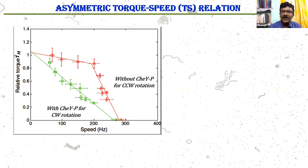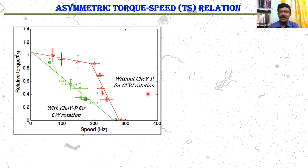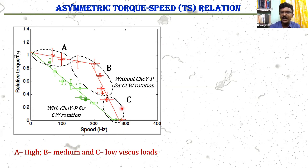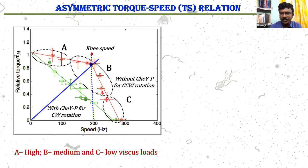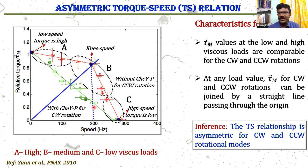This is the torque-speed relationship for CCW rotational mode of BFM, and this is for the CW rotational mode. The CCW torque-speed relationship is measured in the absence of the CheY-P protein. CheY-P is the phosphoregulator protein which binds to the lower part of the motor and changes the rotational direction. In the high-load region, in the CW torque-speed curve, the torque is almost constant up to an intermediate speed value, after which it falls to zero. But for CCW rotational mode, it linearly decreases. So there is some asymmetry present in the torque-speed relationship.